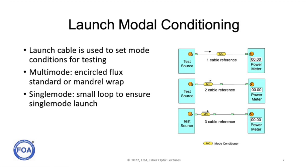The launch cable is also used to condition the modes in the fiber for testing, which is particularly important in multimode cable testing. It can be used to set encircled flux standards or use a mandrel wrap on the launch cable. In single mode, we typically use a small loop to ensure a single mode launch. Either way, it is always the launch cable — the cable attached to the test source — that is used for modal conditioning.